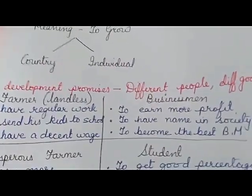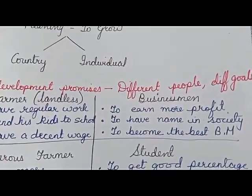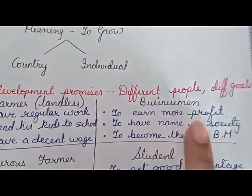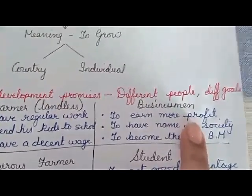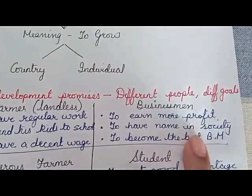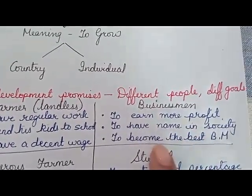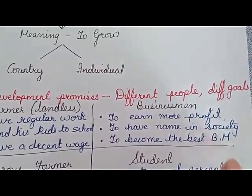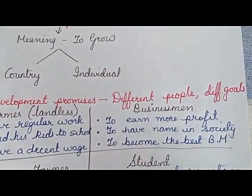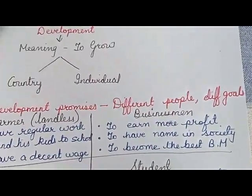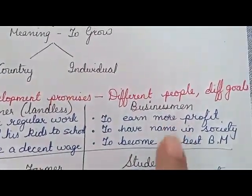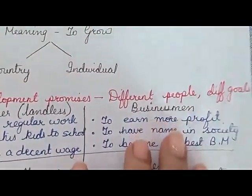Now, if I talk about a businessman — he is already a business person — his first developmental goal will be to earn more profit. Second, to have a name in society; his business should be well known. Third, to become the best businessman — he may want his photograph in a business magazine or to receive a big award. These can be the developmental goals of a businessman.